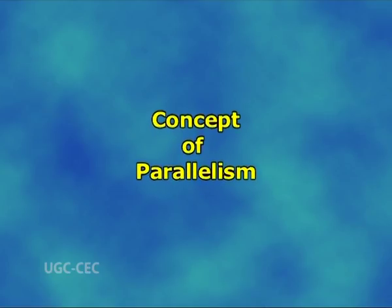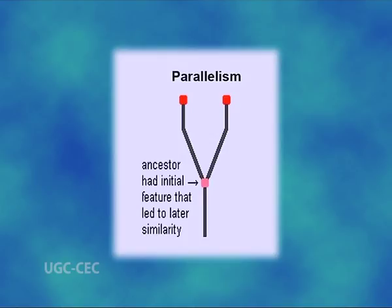Concept of parallelism. Parallelism is the development of similar characters separately in two or more lineages of common ancestry, and on the basis of or channeled by characteristics of that ancestry (Simpson, 1961). The phenomenon of parallel evolution or parallelism is thus one whereby two organisms acquire similar characteristics independently of one another, although they have stemmed from related ancestral stock. Parallel evolution is extremely widespread since most of the genotype remains untouched during speciation.